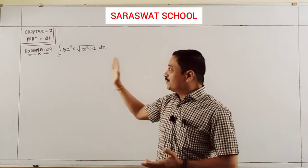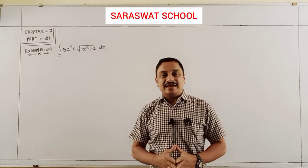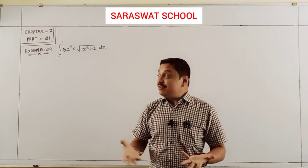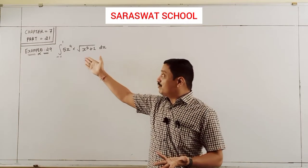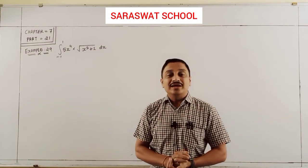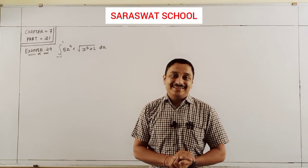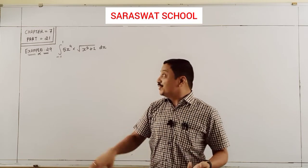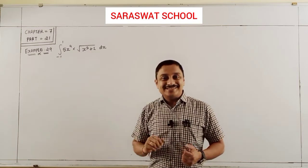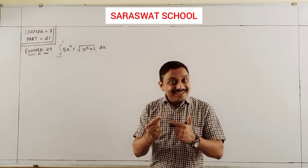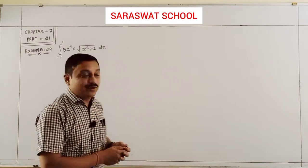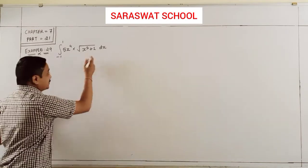So I continue with Example 29. The integration is given from minus 1 to 1 of 5x⁴ divided by the square root of x⁵ plus 1. As you know, for the square root term, I suggest the substitution t.